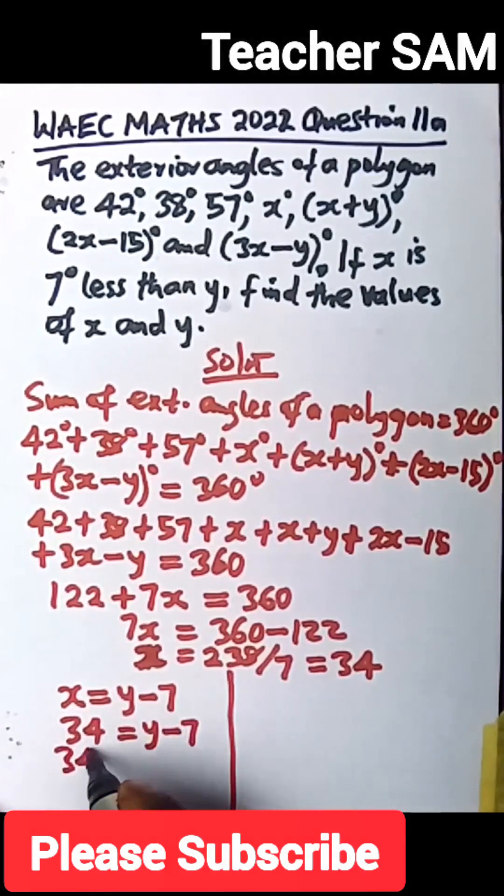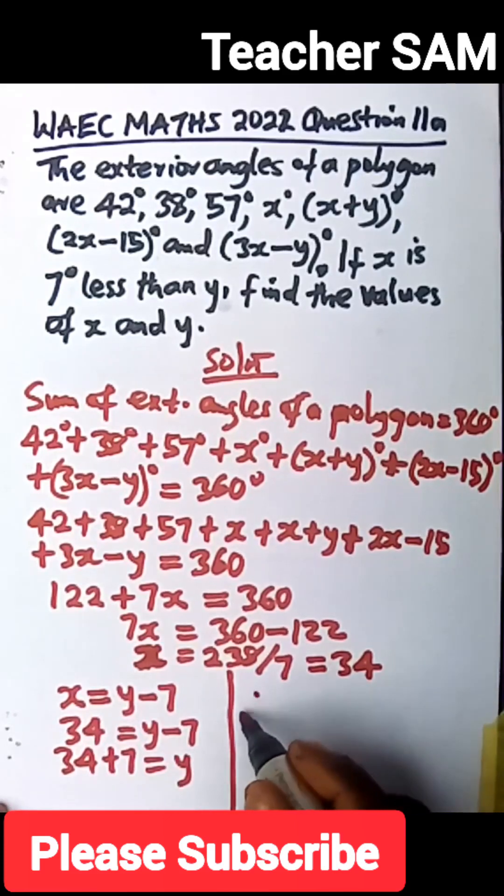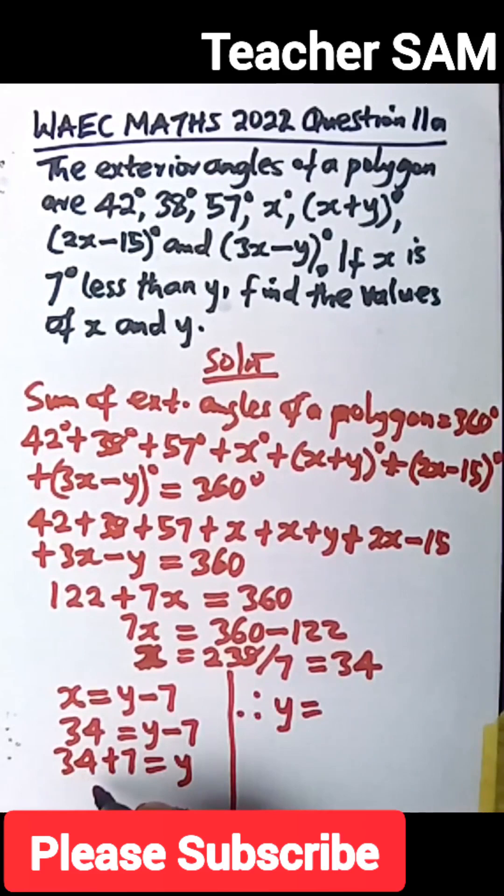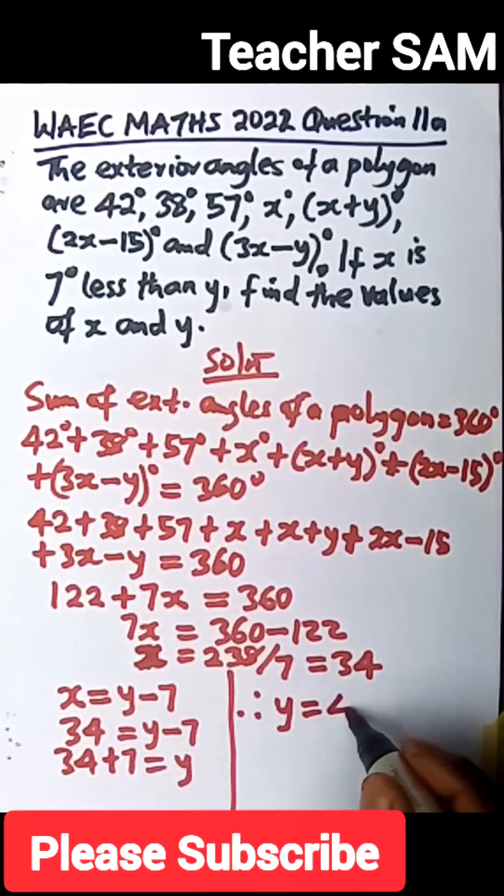So that's 34, moving this over here, we have plus 7 equals to y. So that we can say, therefore, our y will be equal to 34 plus 7, we have 41.